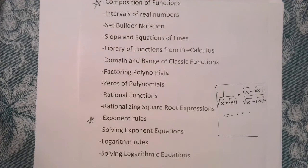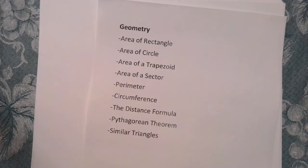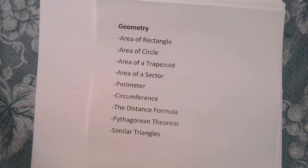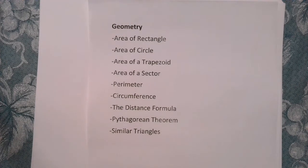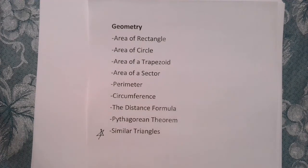Okay, next let's talk about geometry. What do I need to know from geometry? So, a lot of classic formulas. For example, the area of a rectangle formula, area of a circle, area of a trapezoid, area of a sector, perimeter circumference, the distance formula, the Pythagorean theorem, and how to deal with similar triangles, how to set up ratios and solve. That's important. That's something students forget. So you definitely want to look up, again, similar triangles.